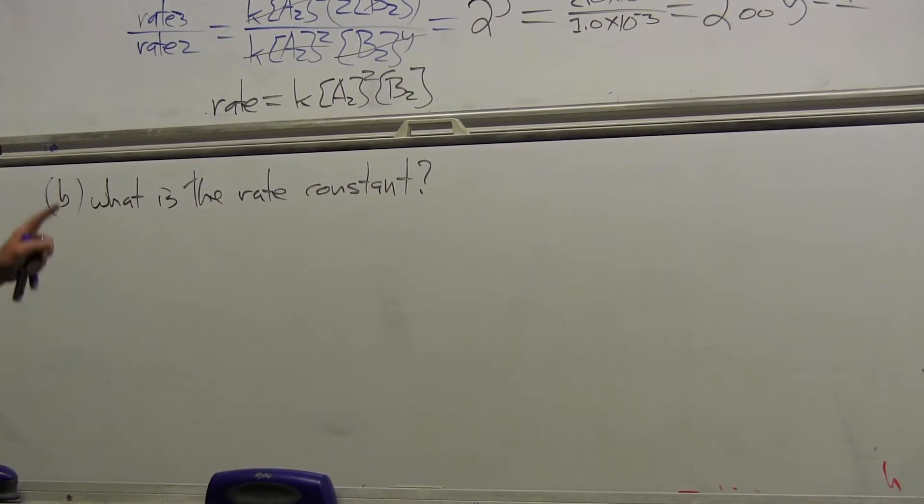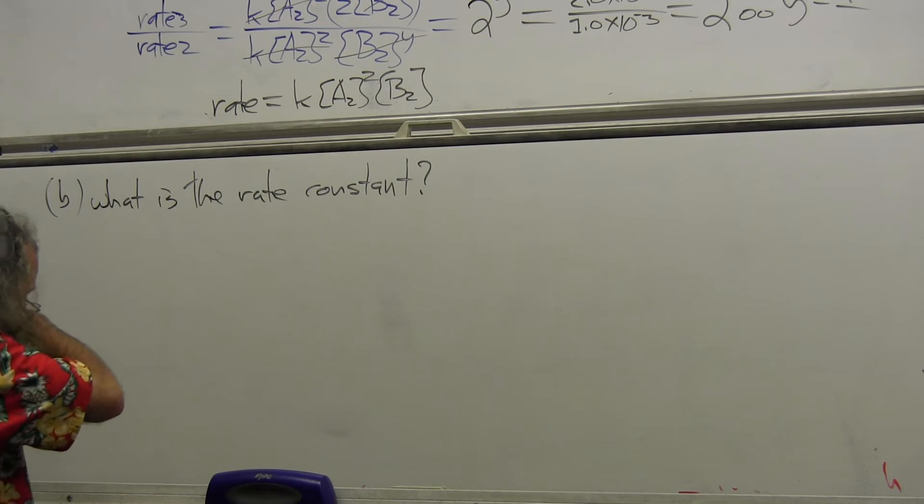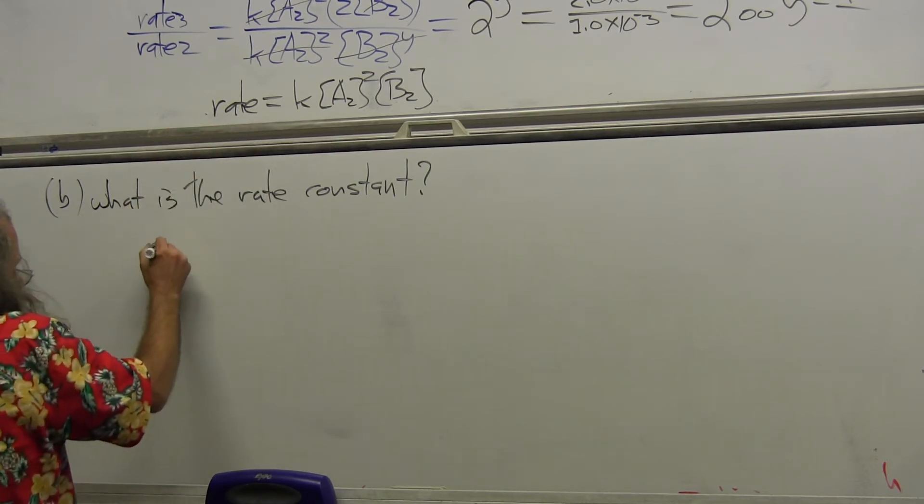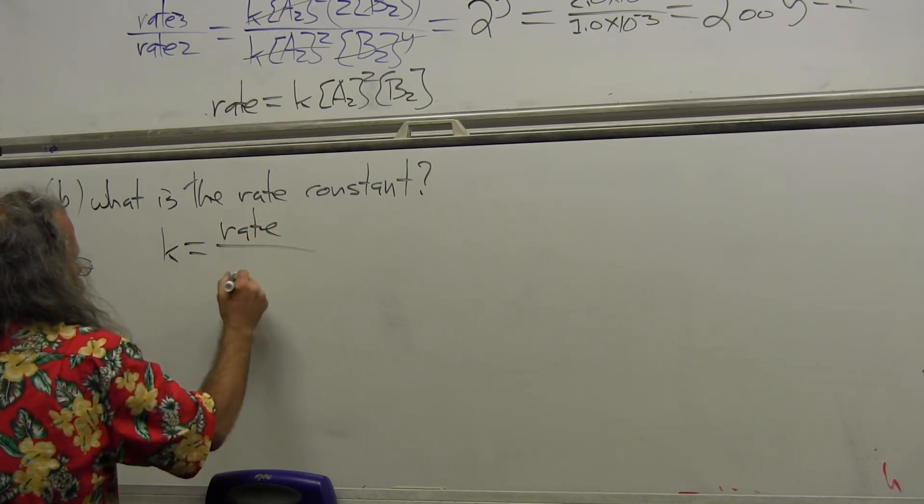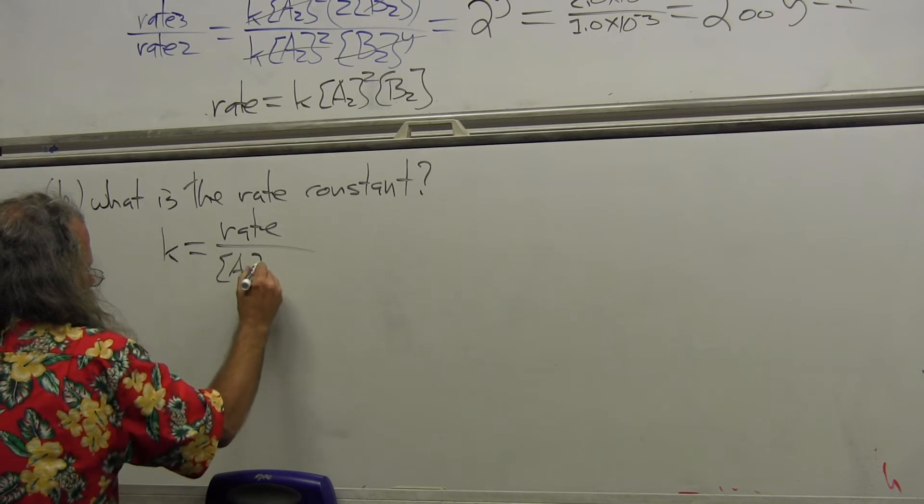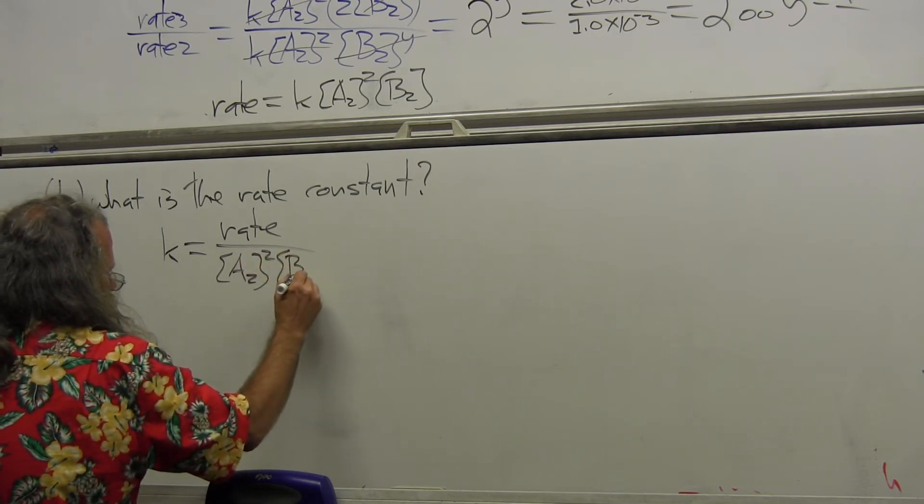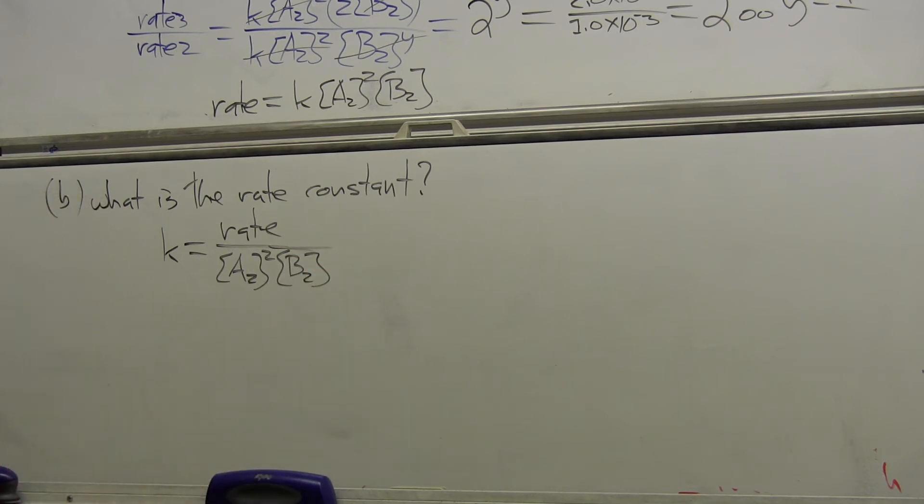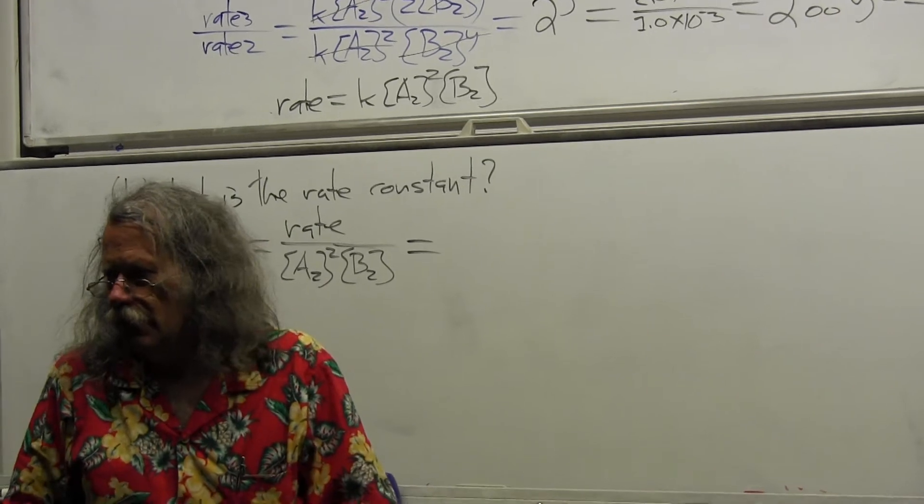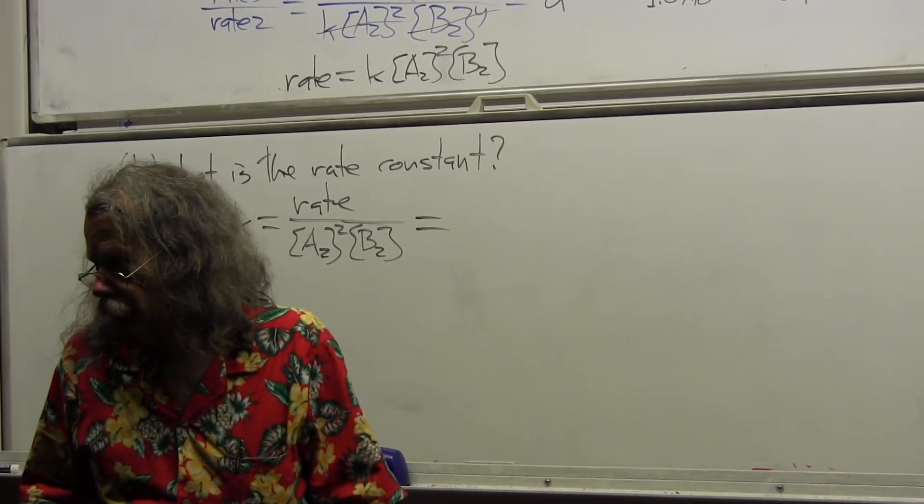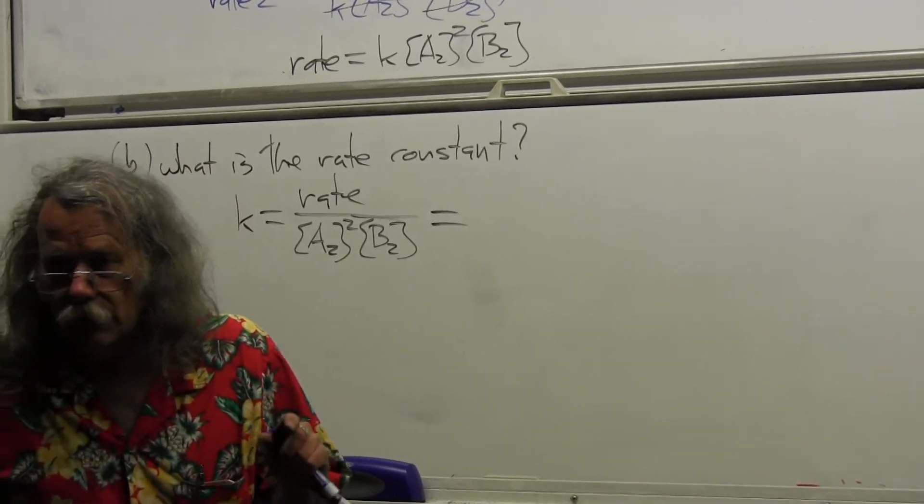Now for part B, this is pretty straight up. We've already written the rate law, so I'm just going to rearrange that expression. K has to be equal to the rate divided by the concentration of A2 squared times the concentration of B2 to the first power. So you've already got half the problem just by writing that out.